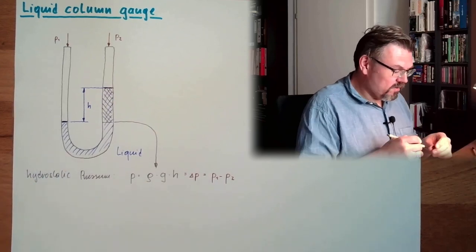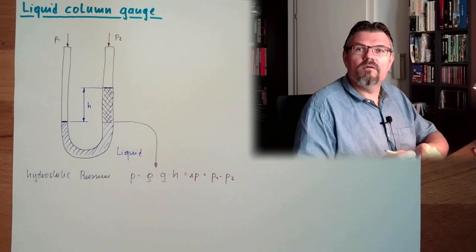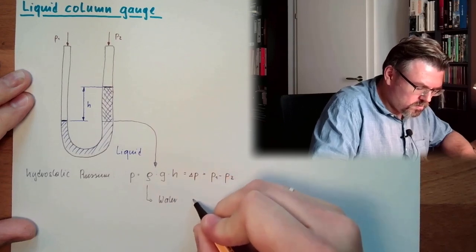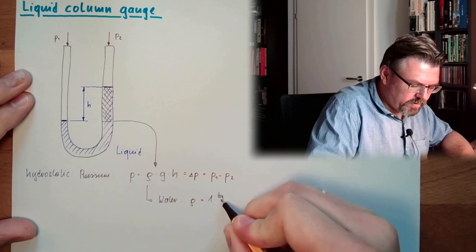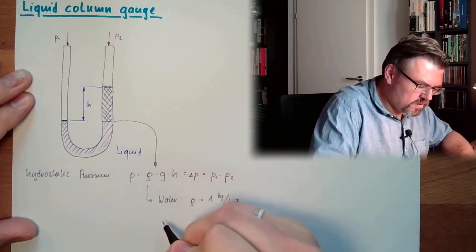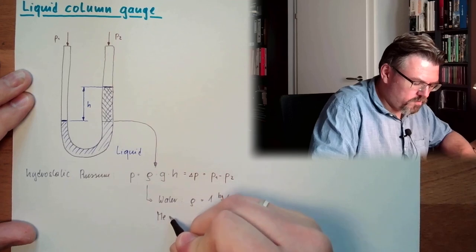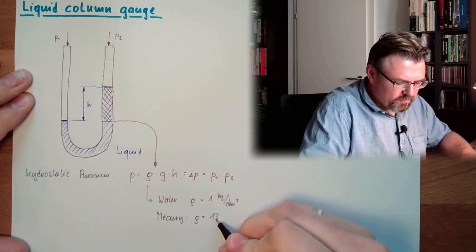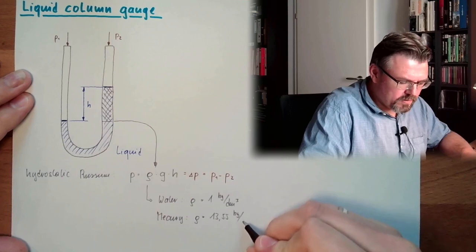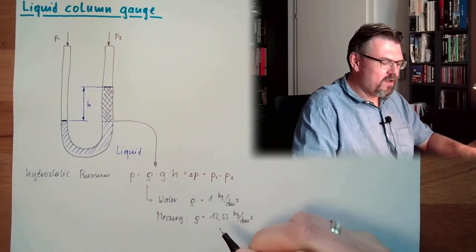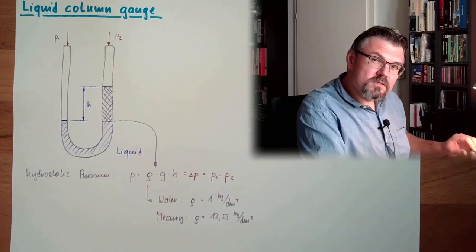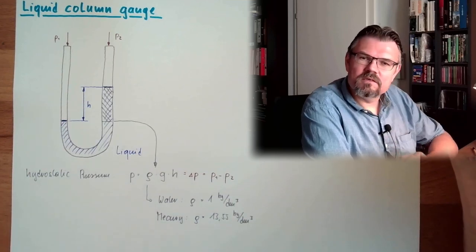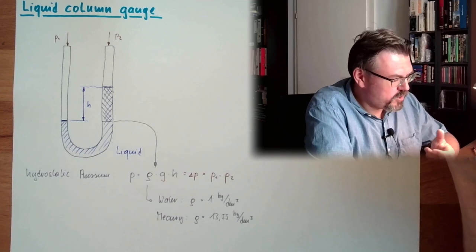Depending on the density of the liquid. So here, for instance, water: one kilogram by cubic decimeter. Or mercury: this is 13.55 kilogram by cubic decimeter. This is why usually mercury was used, because then we would need not that high columns. This is why Evangelista Torricelli used mercury to measure pressure.